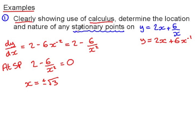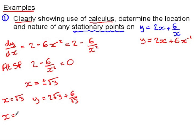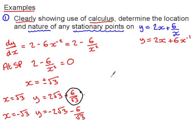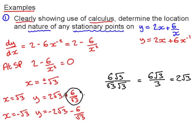x is positive or negative root 3. Now I have the x values of my stationary points; I need to also work out the y values. When x is positive root 3, y is 2 root 3 plus 6 over root 3. When x is negative root 3, y is negative 2 root 3 take 6 over root 3. Now 6 over root 3 is 6 root 3 over 3, or 2 root 3. So we can simplify: 2 root 3 plus 2 root 3 is 4 root 3.